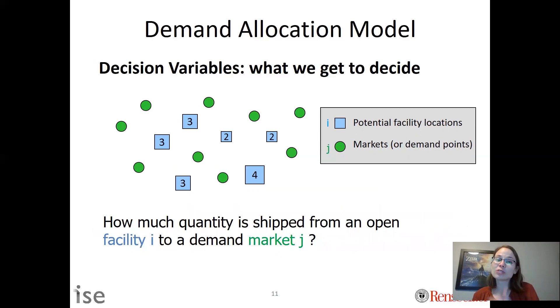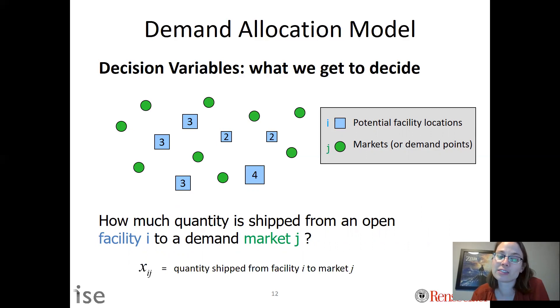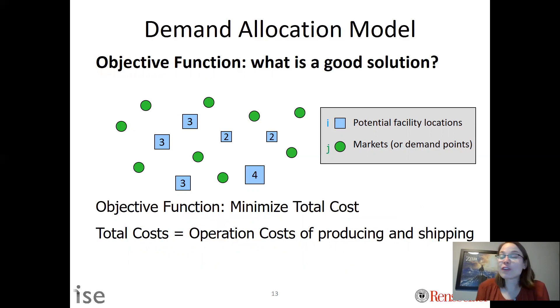In terms of decisions, what do we get to decide? Here we get to decide how much quantity is shipped from an open facility i to a demand market j. We will call that decision variable Xij, the quantity shipped from facility i to market j. And then how do we figure out how we should set Xij? We need to set an objective function, which answers the question: what is a good solution?